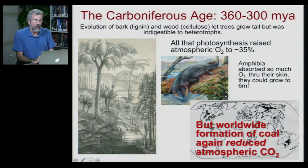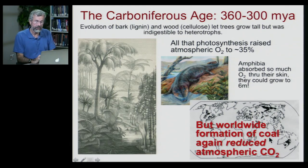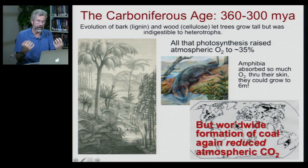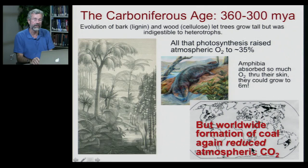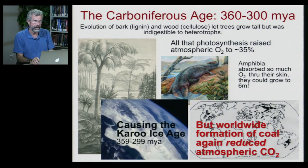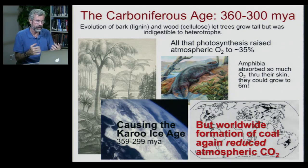But all of this photosynthesis, all of this formation of wood for the first time, all of this ultimately being converted into coal — and we have coal deposits through vast areas of Australia, Siberia, and North America — taking all that carbon out of the air reduced carbon dioxide, and we had another ice age. Without that blanket of carbon dioxide, the Earth once again got really, really cold, and that ice age lasted for nearly 60 million years.